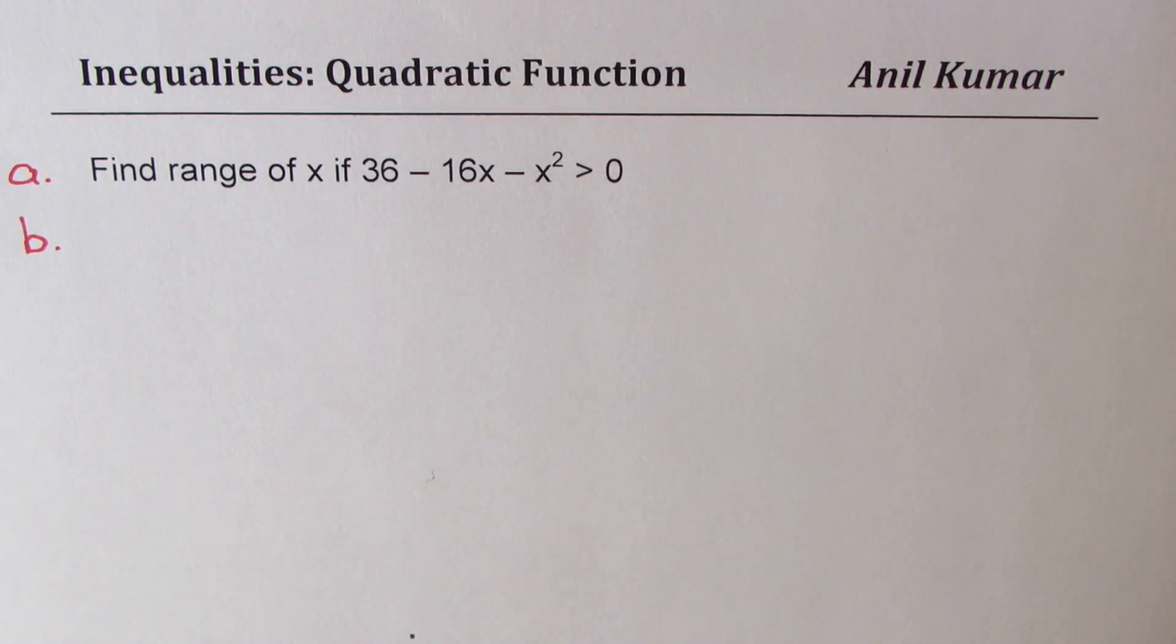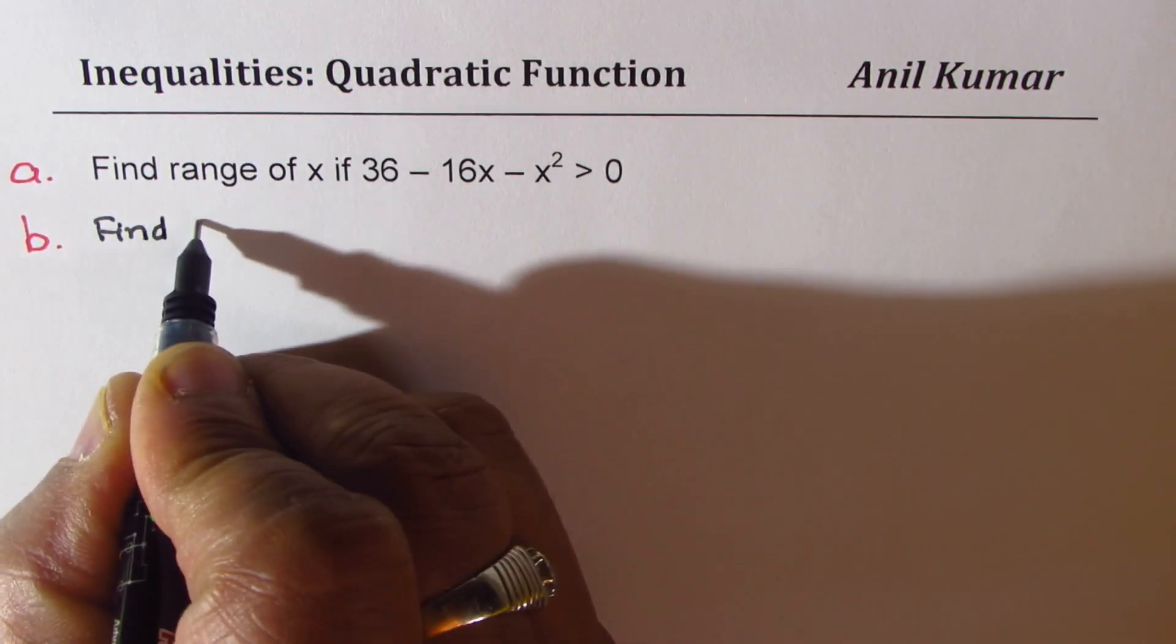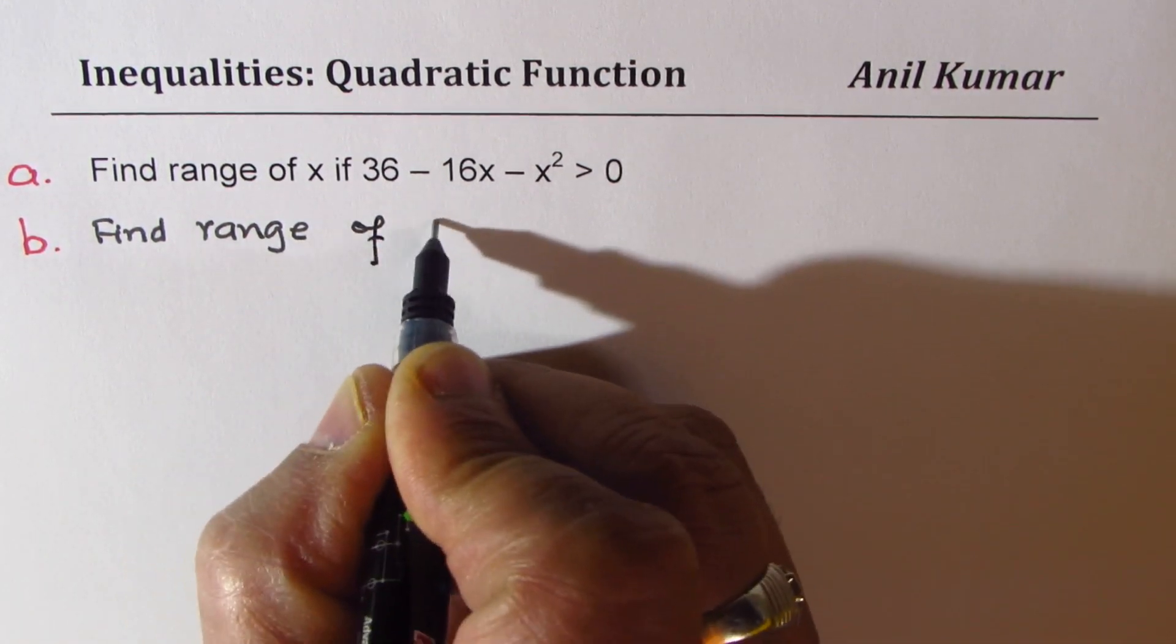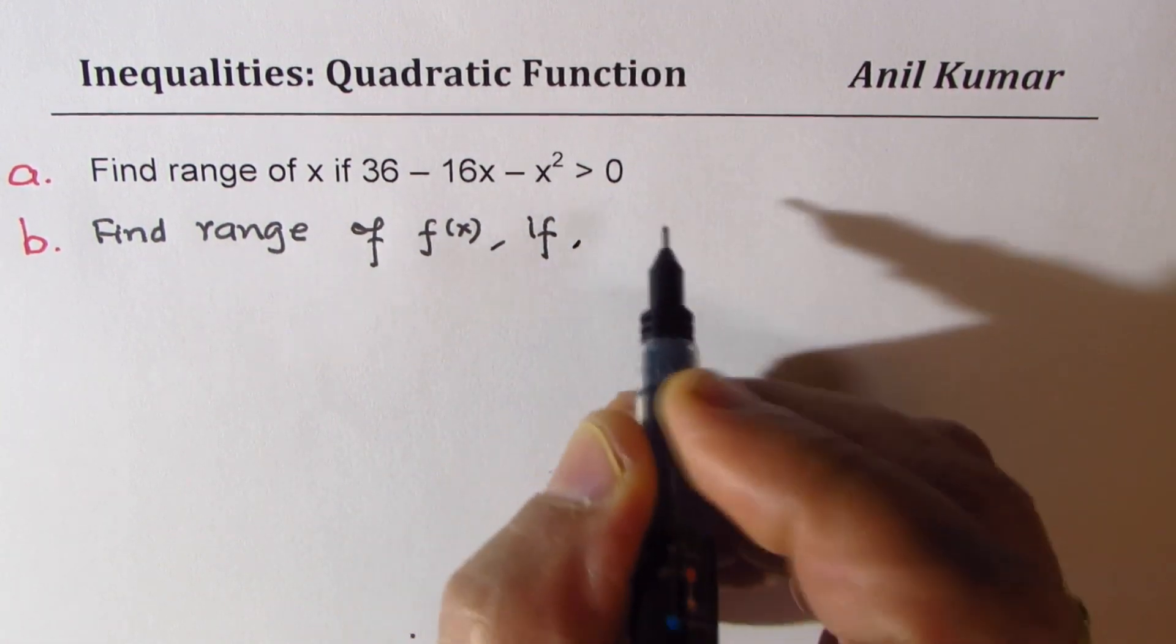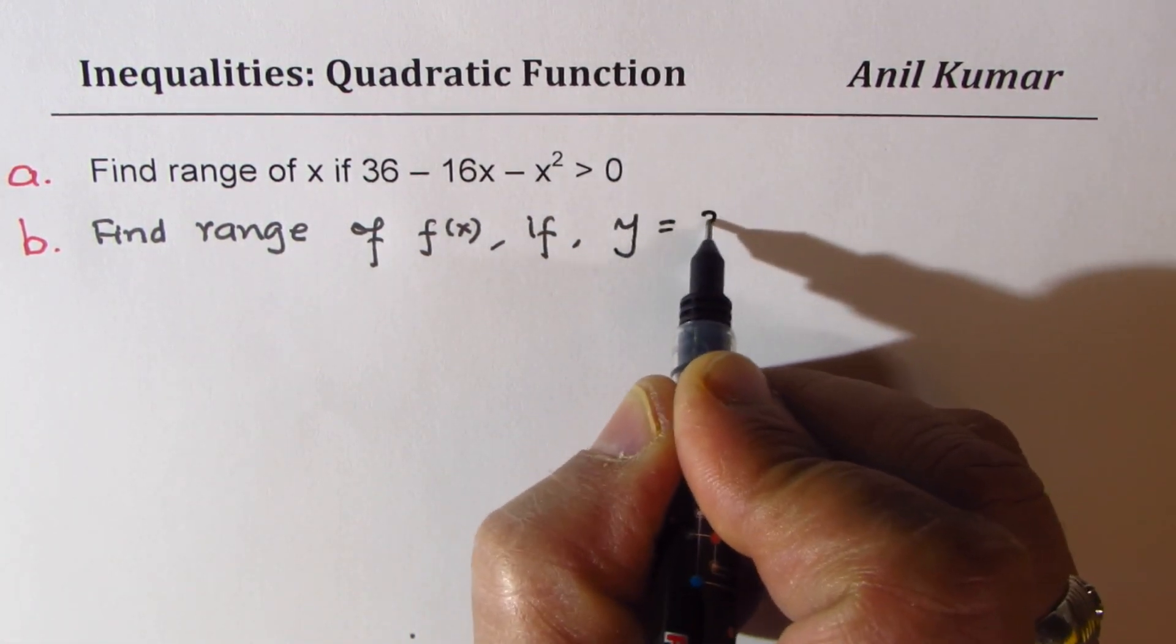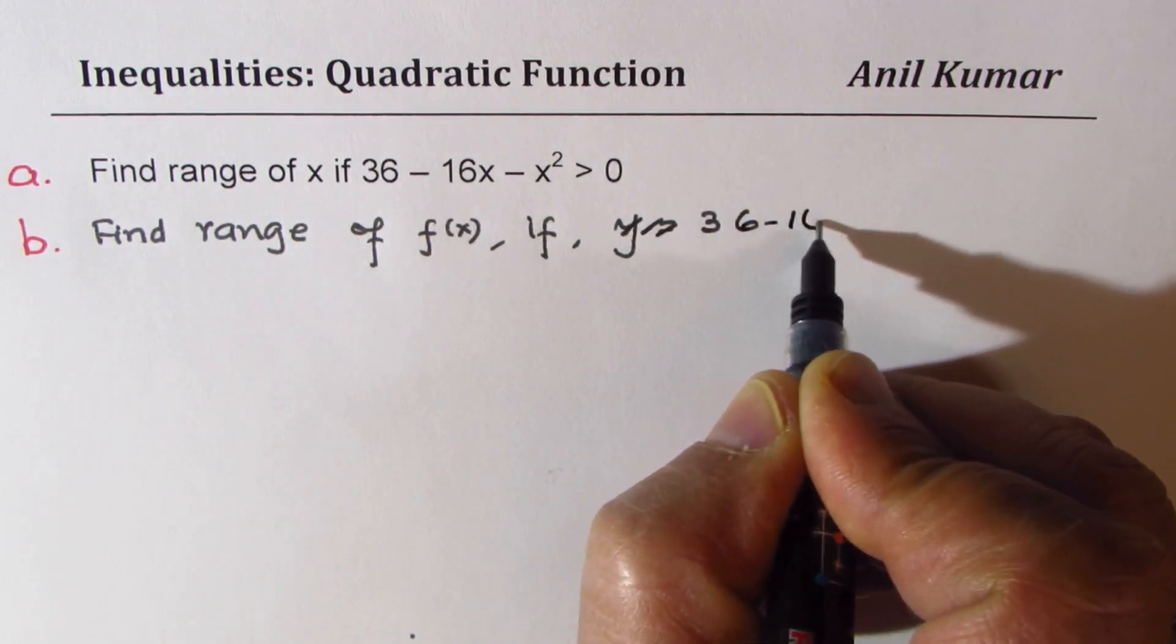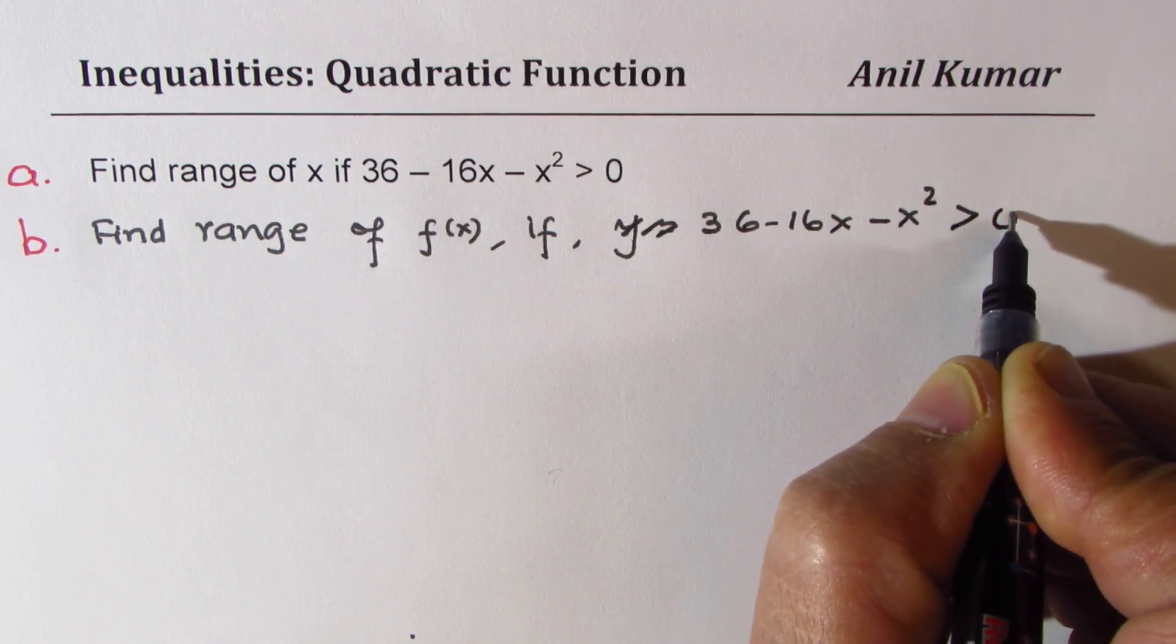Let me rewrite here. Find range of f(x) if 36 minus 16x minus x squared is greater than 0.